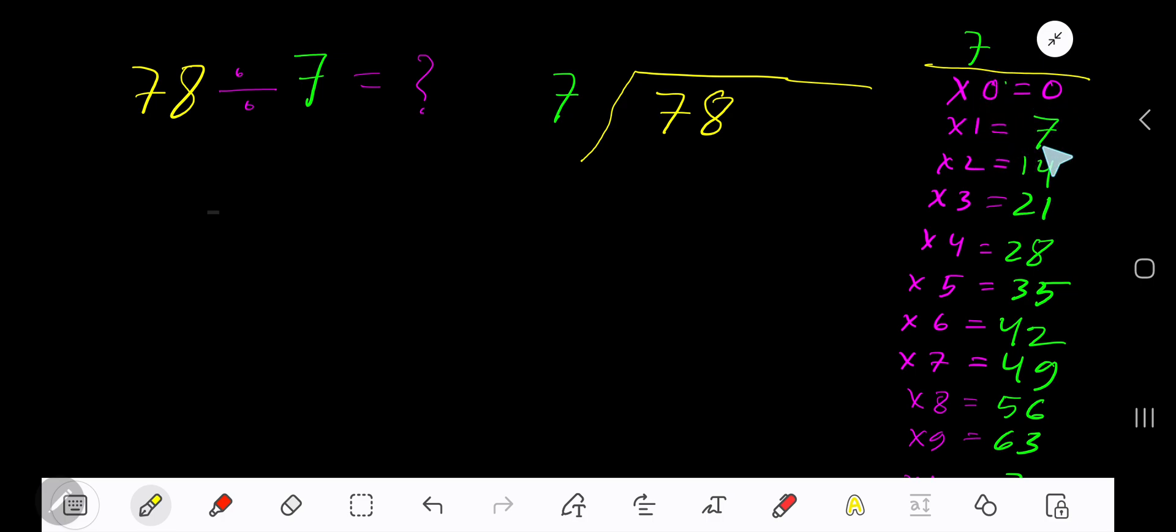7 times 0 is 0, 7 times 1 is 7, 7 times 2 is 14, 7 times 3 is 21, 7 times 4 is 28.